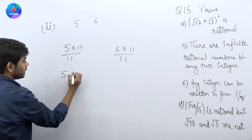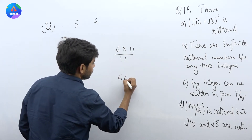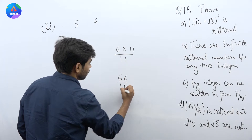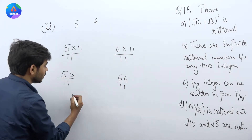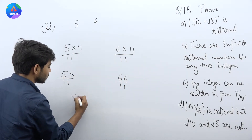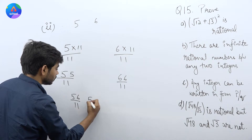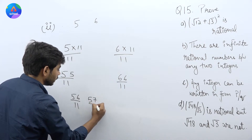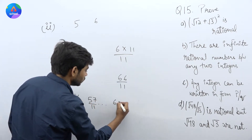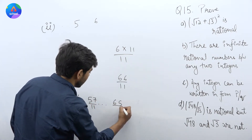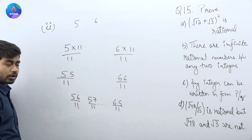5 को 55/11 और 6 को 66/11 लिखते हैं। इनके बीच के rational numbers हैं: 56/11, 57/11, and up to 65/11, so on.